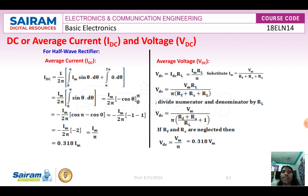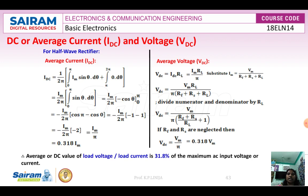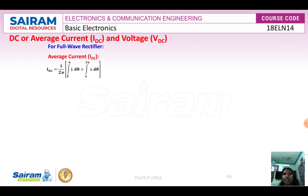This result is for the half wave rectifier. The load voltage or load current is 31.8% of the maximum AC input voltage or current. For the full wave rectifier, both the positive half cycle and the negative half cycle cause conduction, so IDC has contributions from both 0 to π and π to 2π.